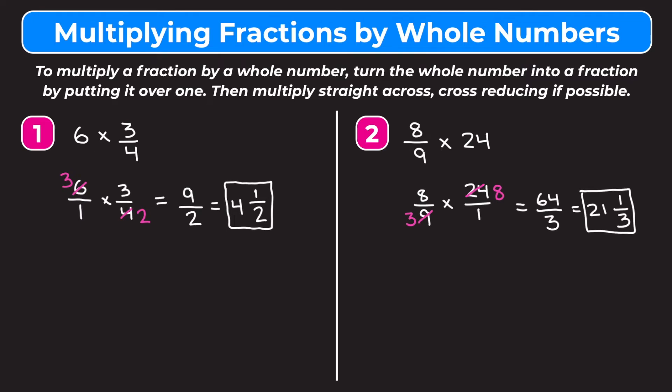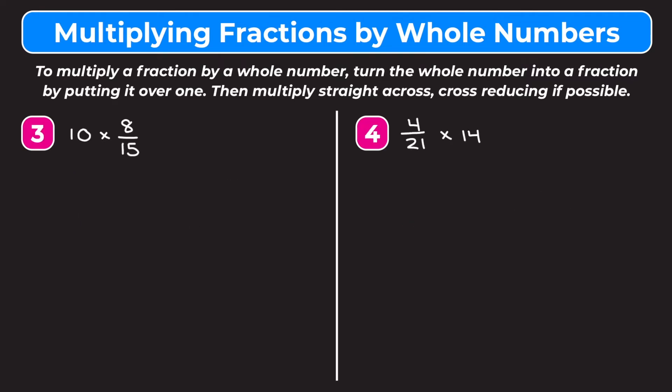Let's go through two more examples. I encourage you to pause the video and try them on your own, then watch me work through them to check your answer. Example three is ten times eight-fifteenths. We start by turning ten into a fraction — ten over one — giving us ten over one times eight over fifteen.